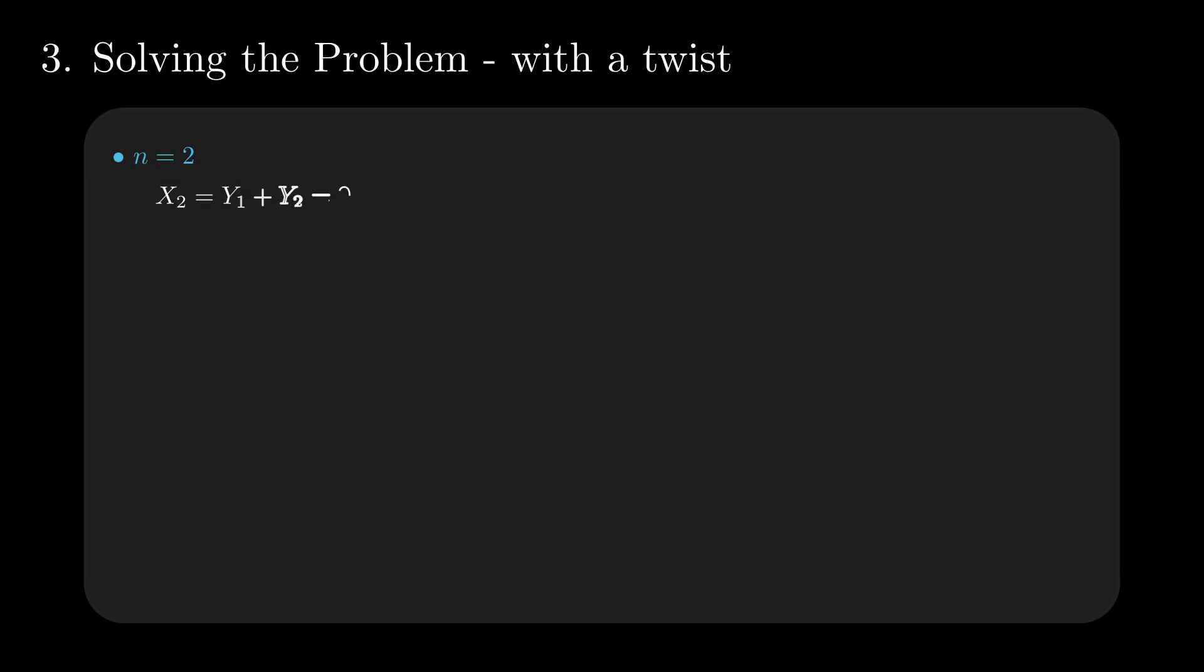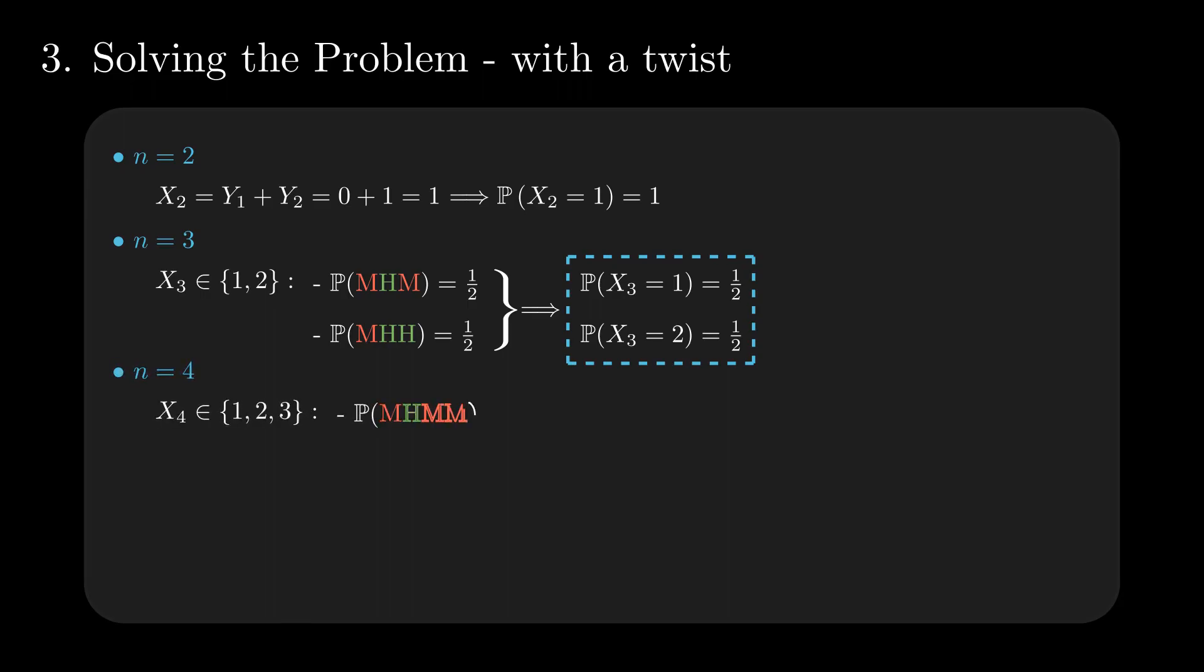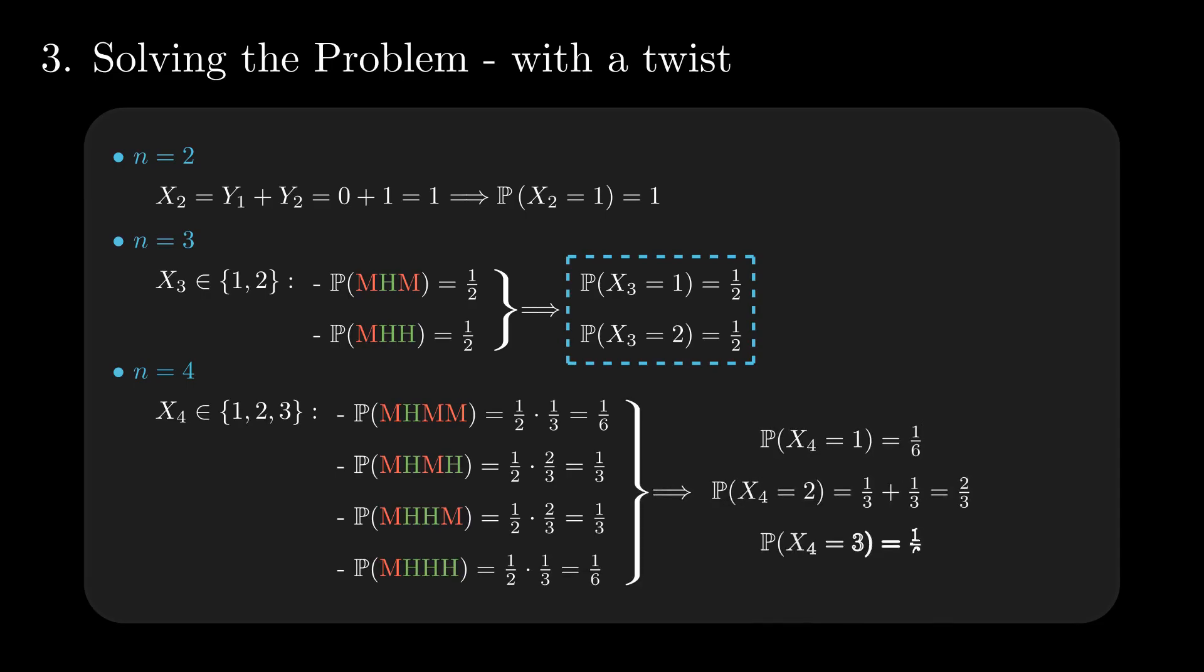Employ the same formal setting with appropriate changes in the probability of Y_i equals 1. Since it works so well for the first problem, we can use the power of examples again for 2, 3, and 4 tosses. Unfortunately, a formula cannot be easily observed, but we can attempt to deduce it the old-fashioned way.